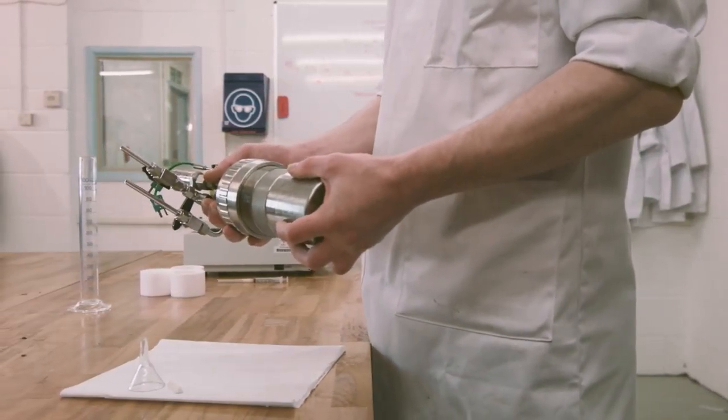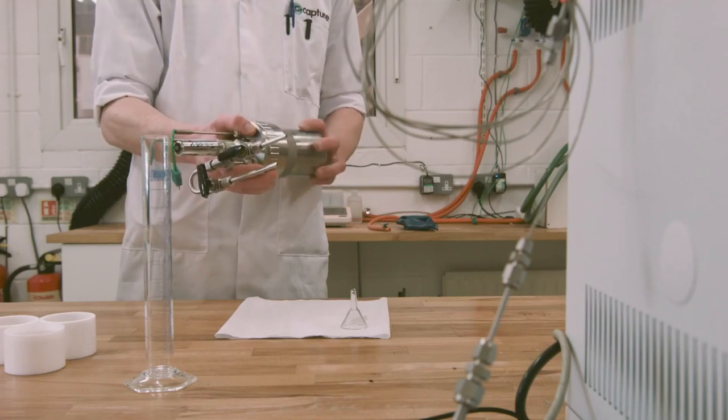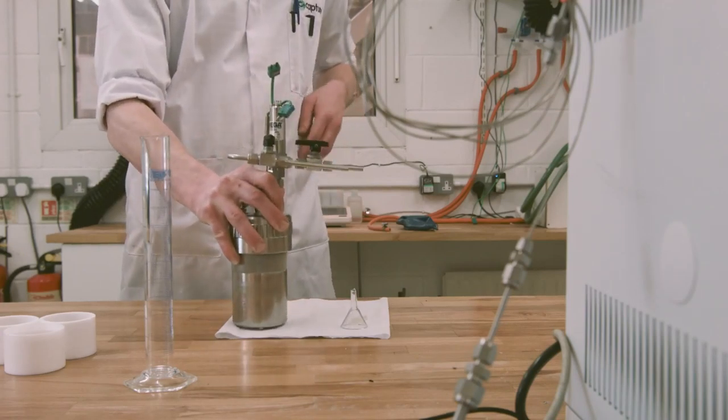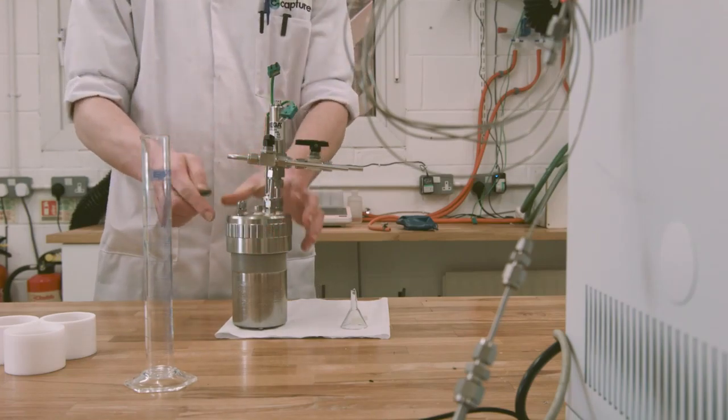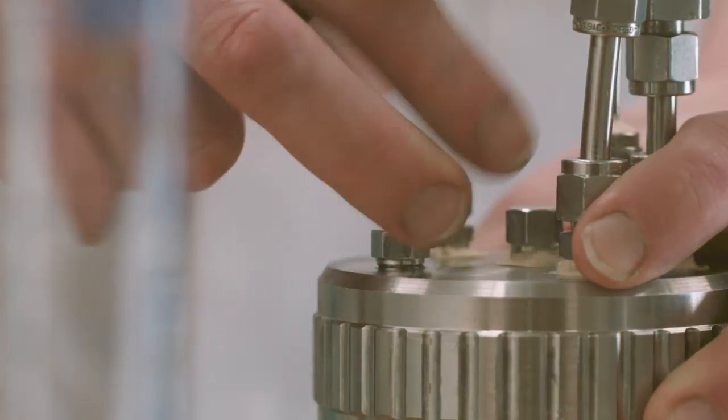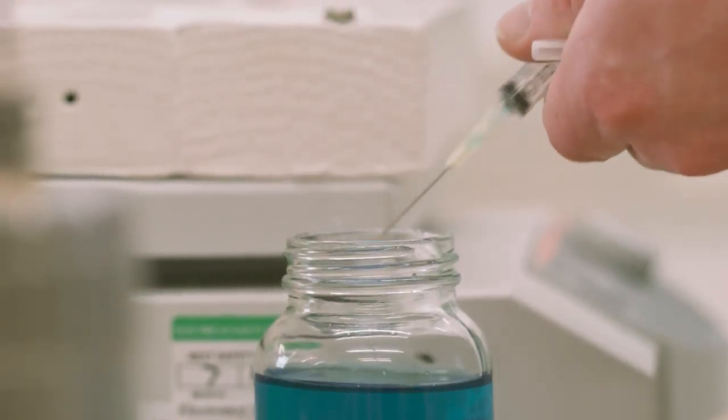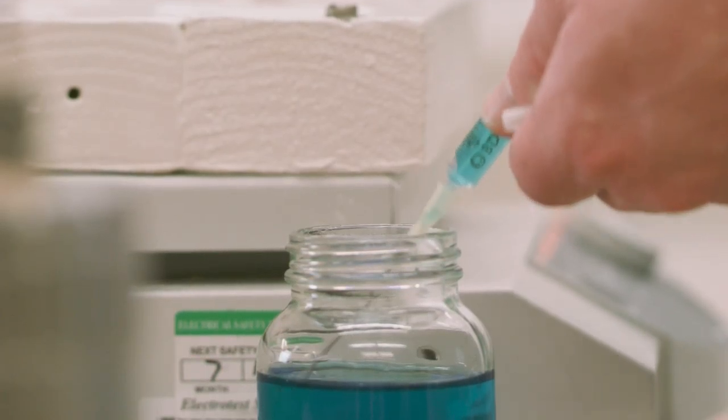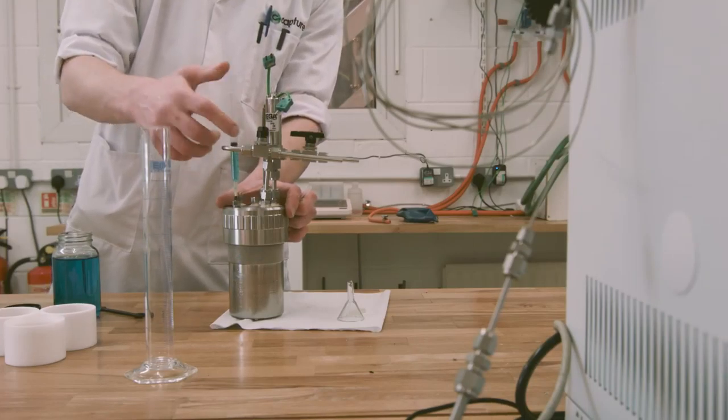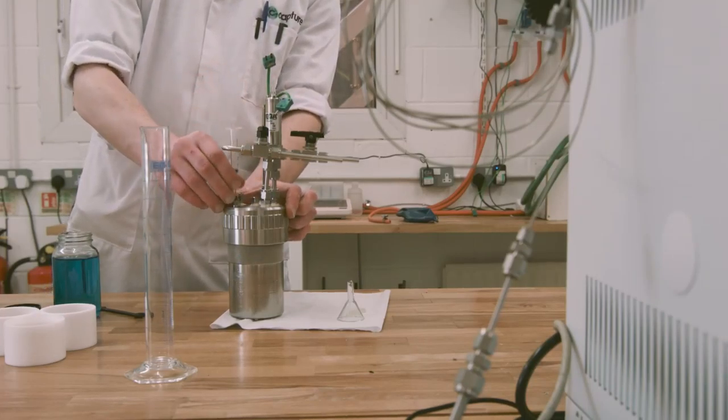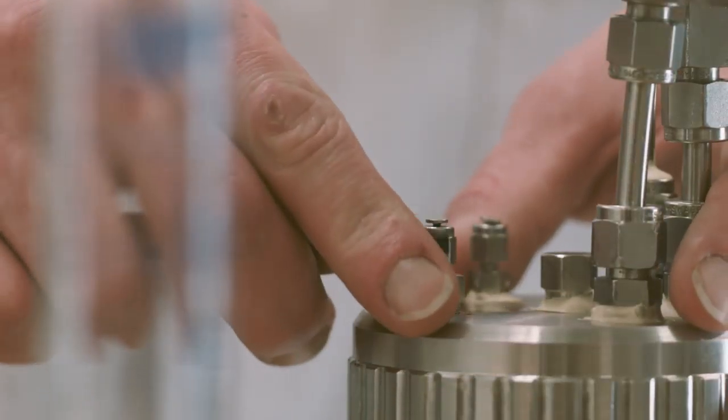The way our technology works is you bubble your gas stream, usually containing CO2, through your solvent. The CO2 is held within that solvent and any other gases that are unreactive just pass through, so methane, nitrogen. You then pass your solvent into a desorber where it's heated up, CO2 comes off and you get your solvent regenerated which you can reuse then in a continuous process.